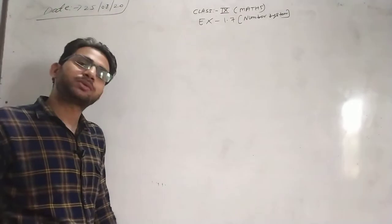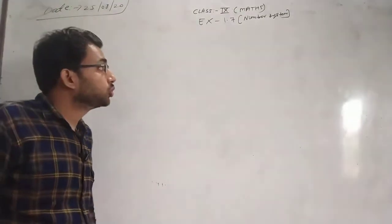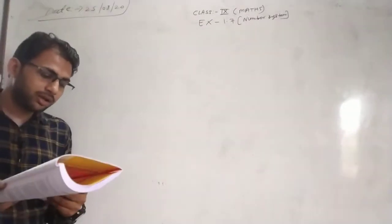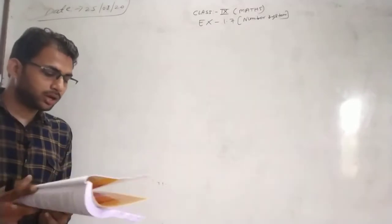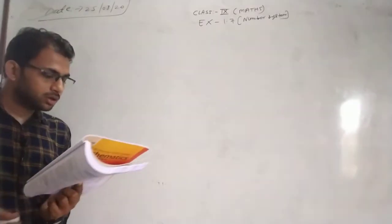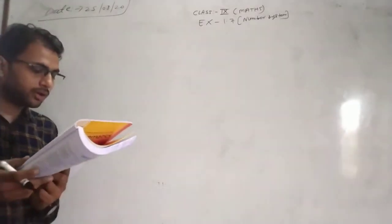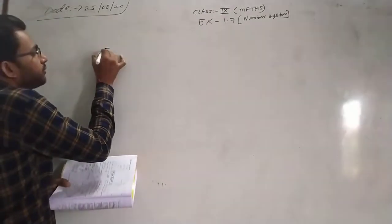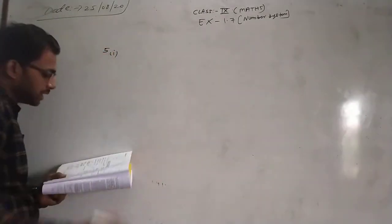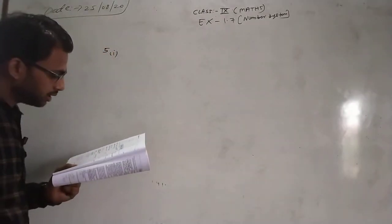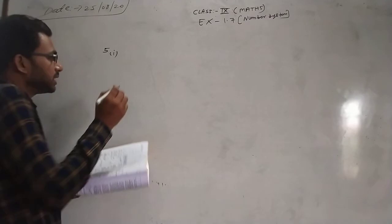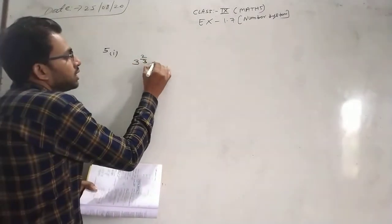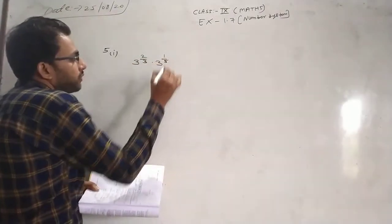Don't run away. We have only board time. In 1.7 we discussed questions up to number 4. We did some questions about the 5th. The first question we did — I am repeating it. 3 to power 2 by 3, multiplied by 3 to power 1 upon 5.